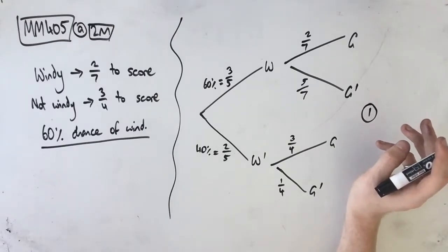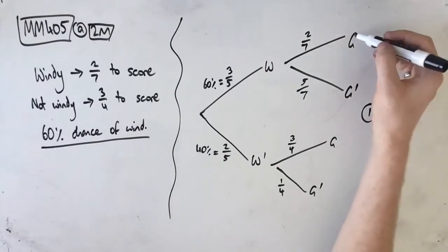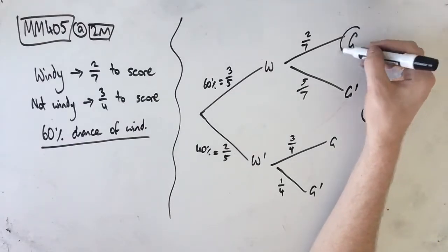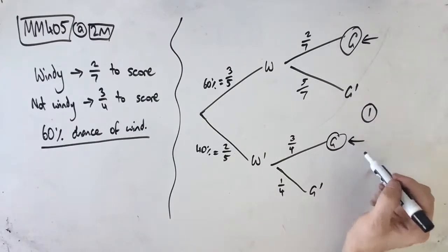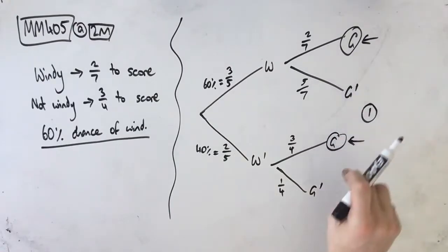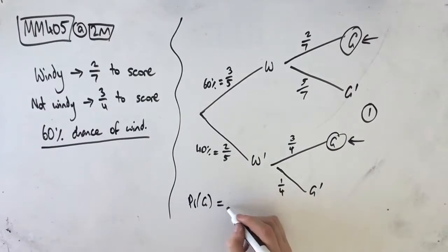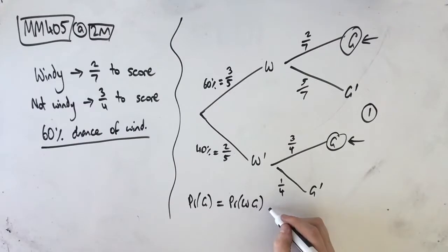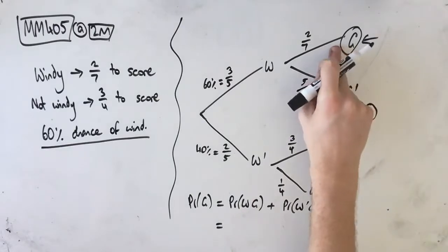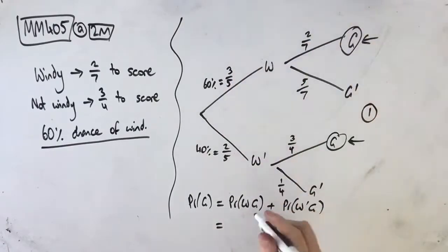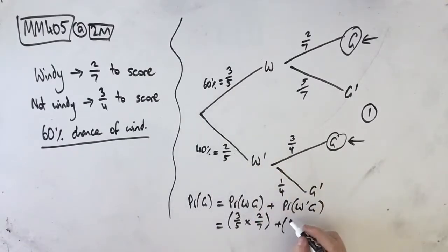Next, we are looking for the probability that he kicks a goal on any given Sunday. So we're looking for the probability that he kicks a goal here or here — where it's windy and he kicks a goal, or where it's not windy and he kicks a goal. These are the two outcomes we're looking for. So the probability that he kicks a goal equals the probability that it's windy and he kicks a goal, or the probability that it's not windy and he kicks a goal. The WG pathway probability is 3 in 5 times 2 in 7, and the not-windy goal pathway is 2 in 5 times 3 in 4.